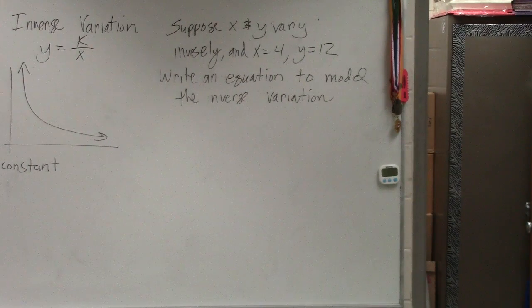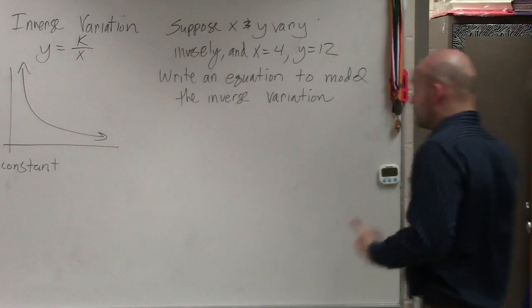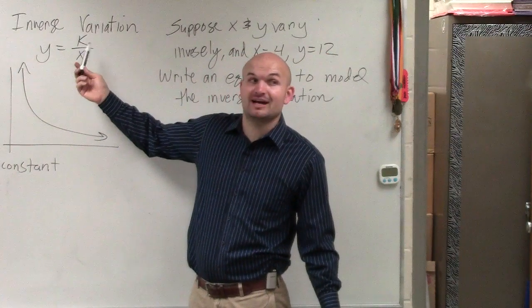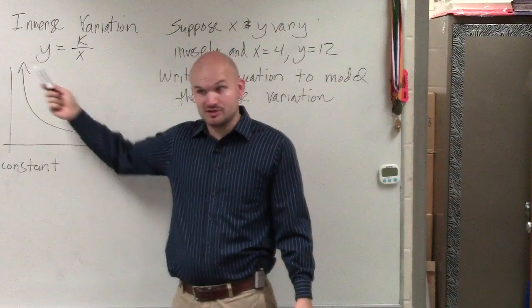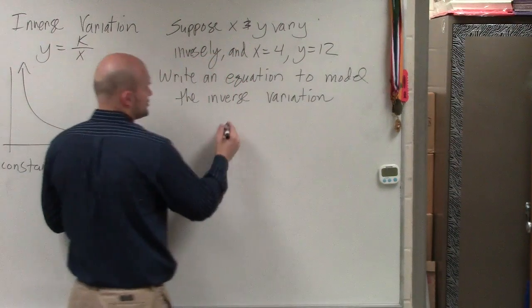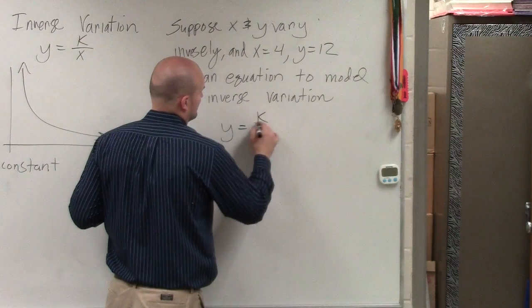So it says they vary inversely, right? So if it's varying inversely, we need to know this formula. It's not going to be provided to you. You guys need to know this is inverse, that's direct. So they're saying we have an inverse relationship. So y equals k over x.